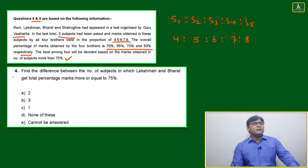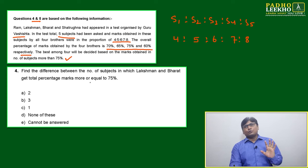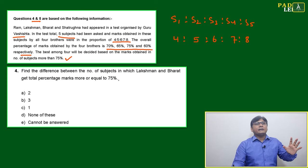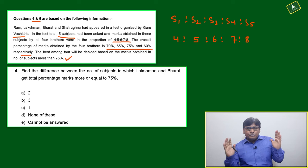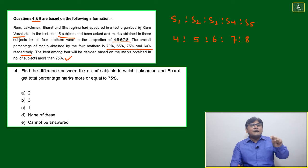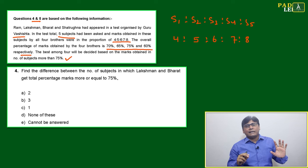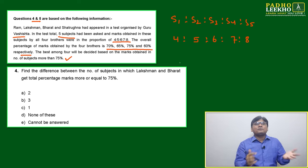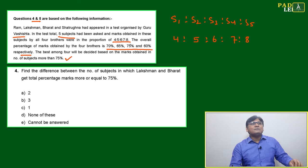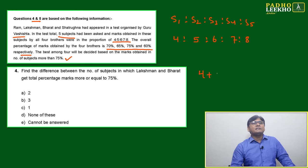Question number four is: find the difference between the number of subjects in which Lachman and Bharat get total percentage marks greater than or equal to 75%. To solve this, find the individual score of all five subjects for all four brothers. Then check how many subjects Lachman got 75% or more, how many subjects Bharat got 75% or more, and find the difference. Since all four brothers have the same proportion of scores in five subjects, we proceed accordingly.